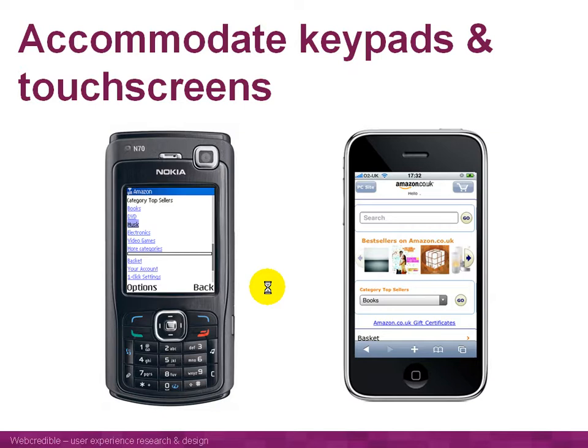The other thing to bear in mind is differences in keypads and the way people interact with websites on different types of mobile phones. On the left, we have a traditional mobile phone with a 12-digit number keypad. On these, people typically browse up a web page using the joystick or directional keypad. There's no separate cursor — on a PC we have a mouse and point the arrow at a link or button and click.